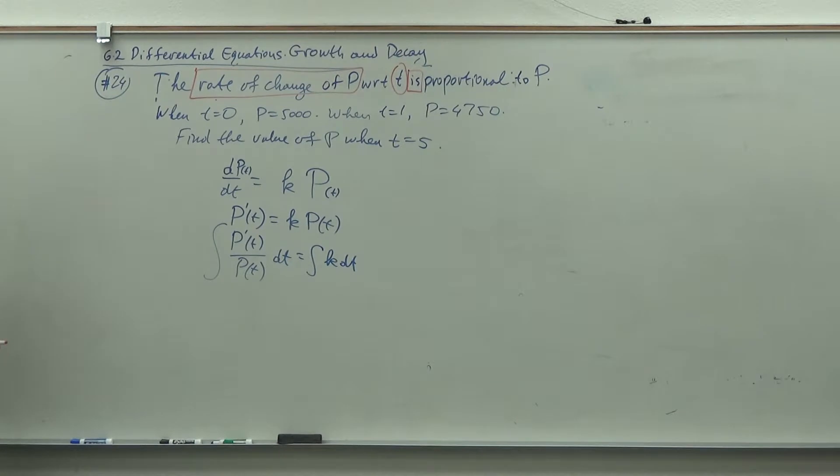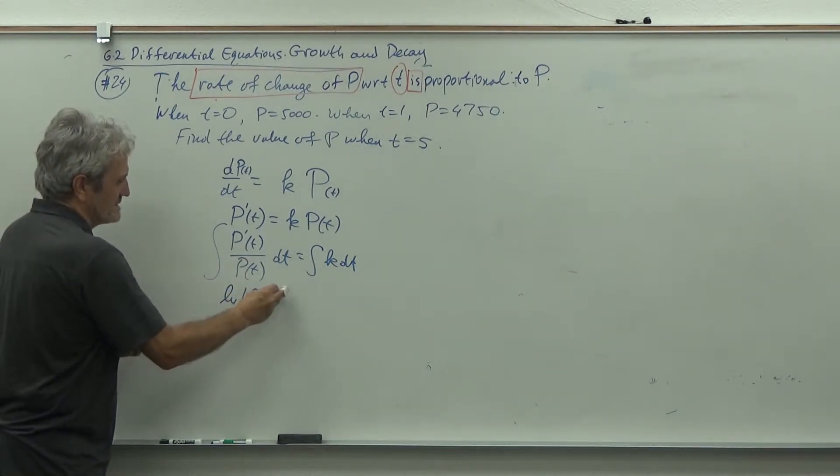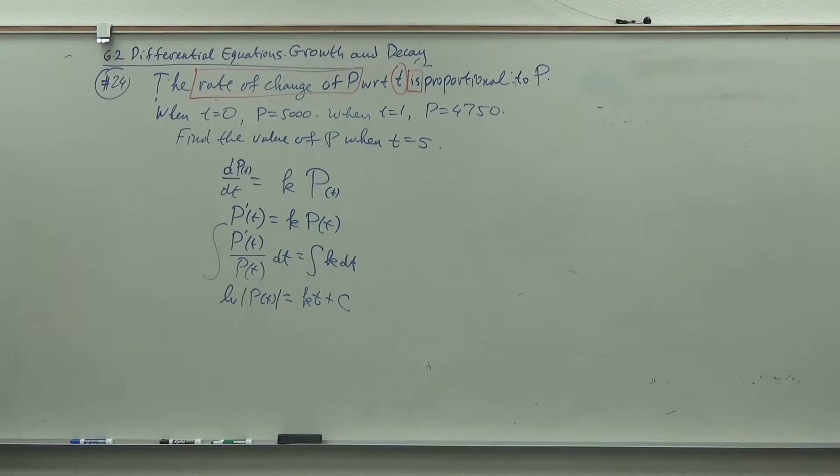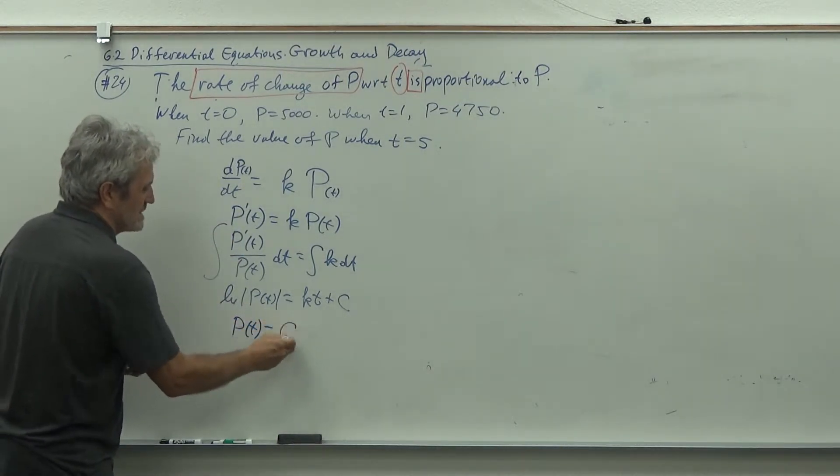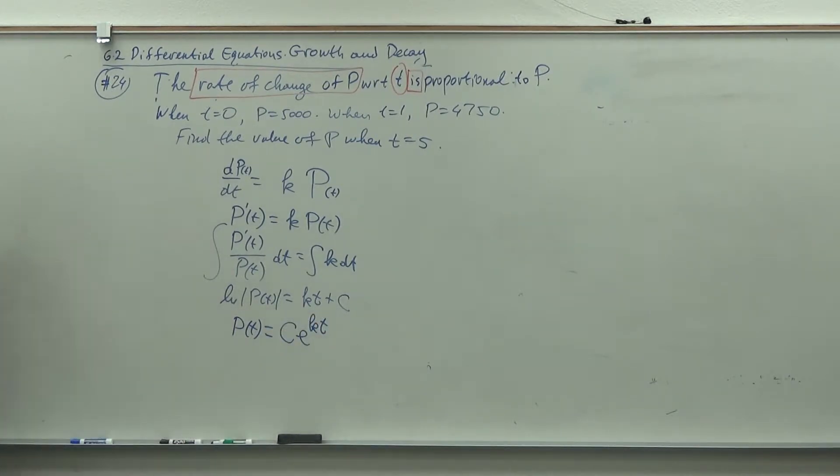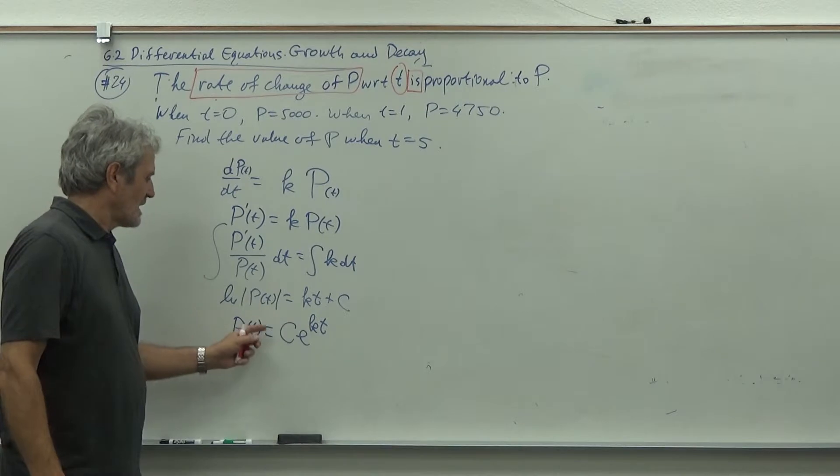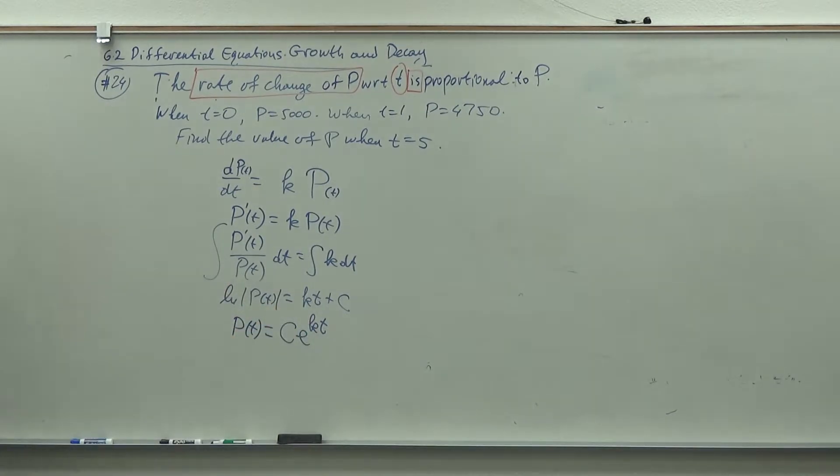And then the same way as a minute ago, this is ln of absolute value of P of T equals kT plus C. Now if you remember a minute ago we did a little trickery: e to the... then plus becomes times. Now we know what will happen, so we don't have to go all the way through. So it will be C e to the kT. If you didn't understand this jump, just check that problem we did a minute ago.